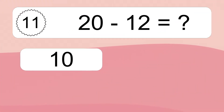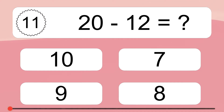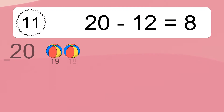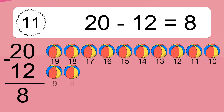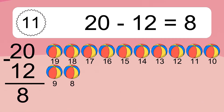20 minus 12 equals what? 20 minus 12 equals 8. Let's count it: 19, 18, 17, 16, 15, 14...